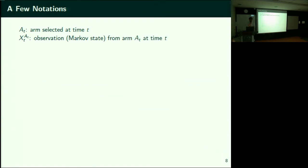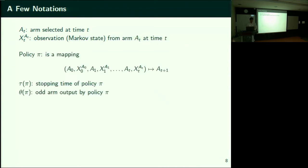Just a couple of quick notations: let AT denote the arm selected at time T — the movie you observe at time T. The observation you got from movie AT is XT_AT at time T.